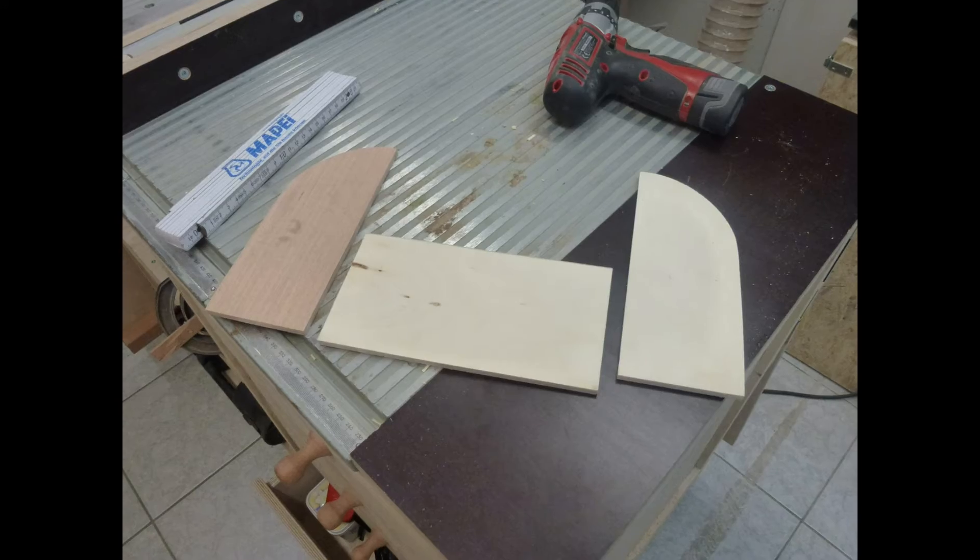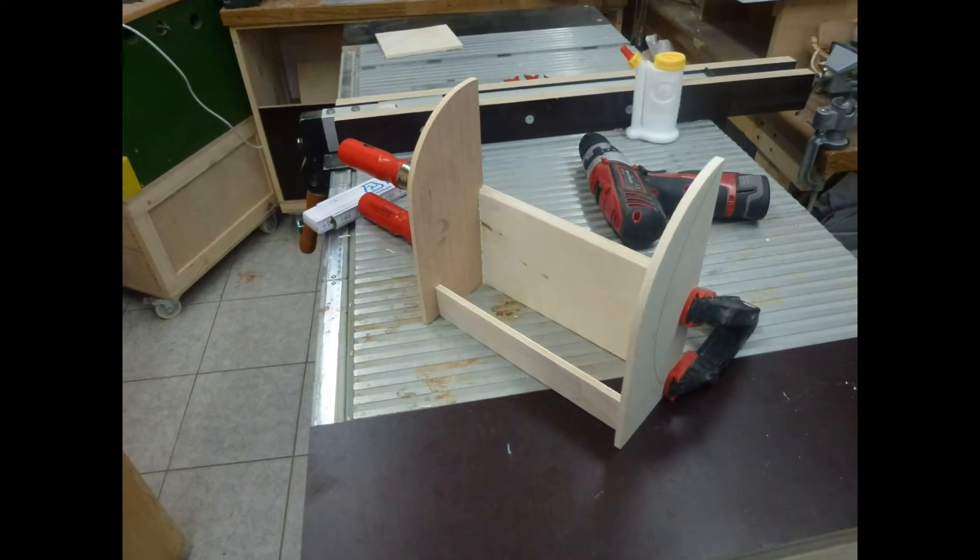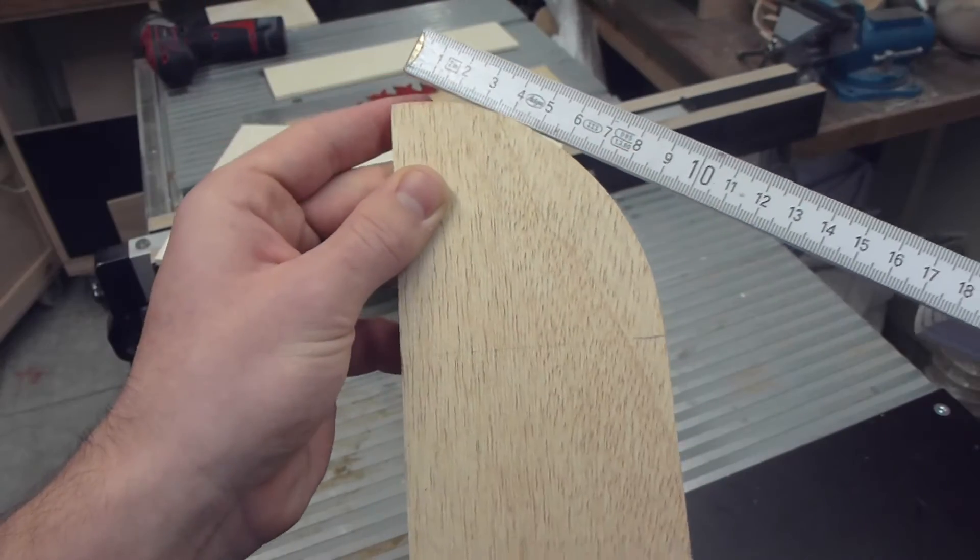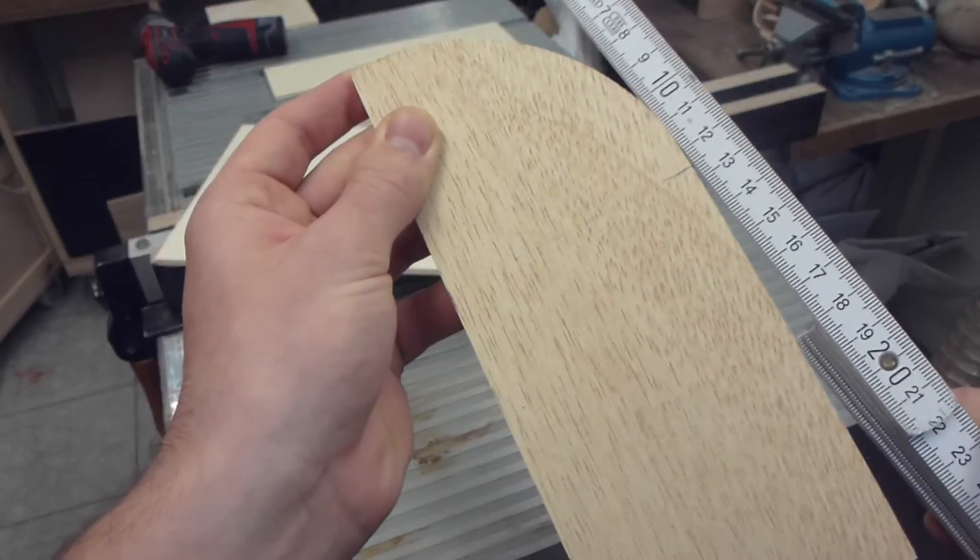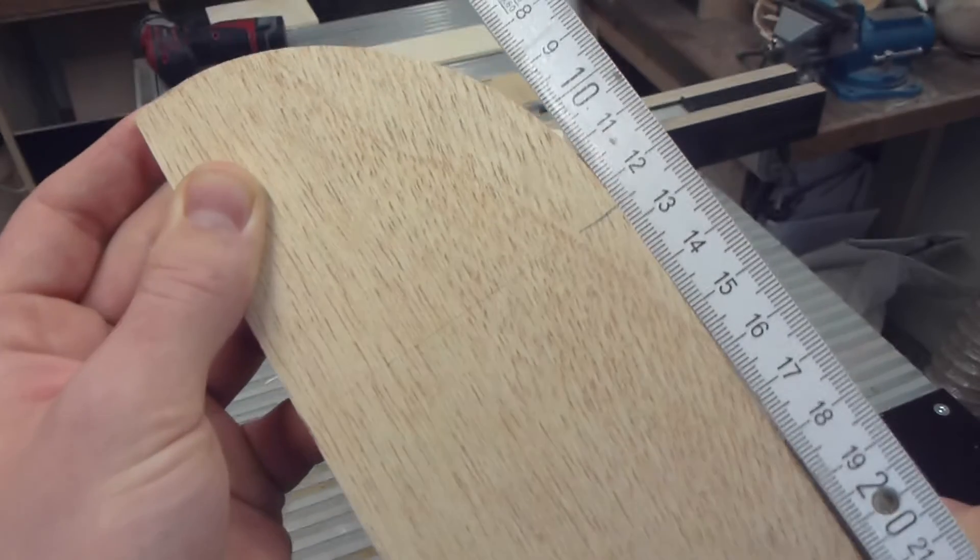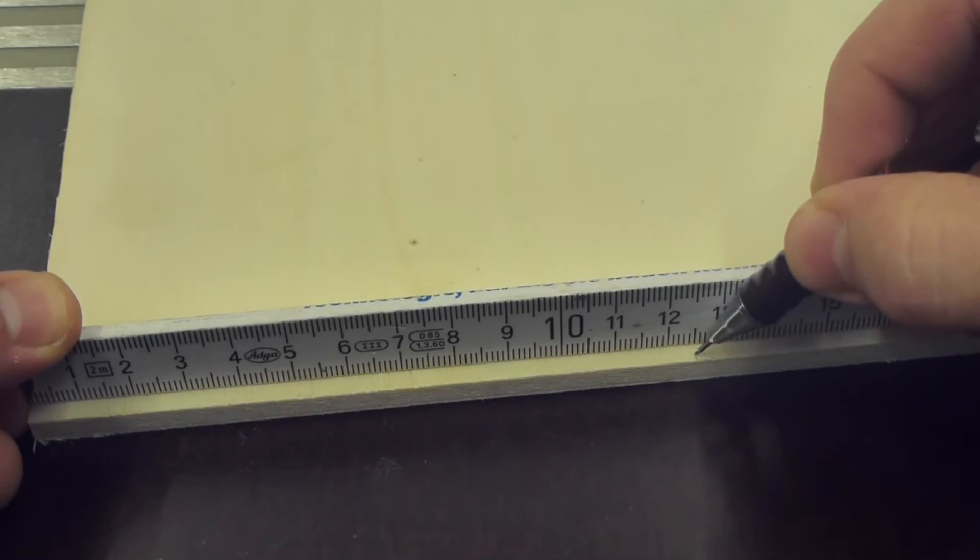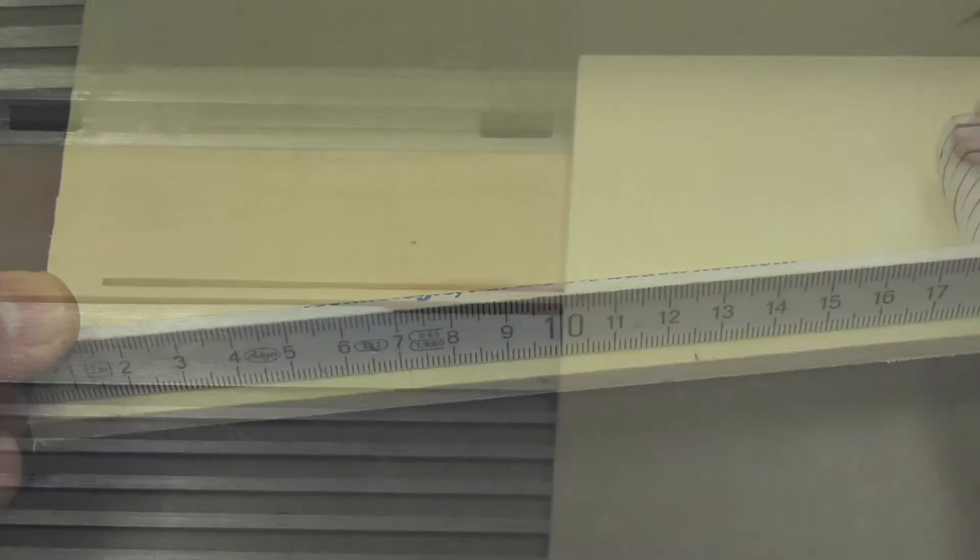So I started by cutting out some pieces of plywood with a similar shape to the original dust chute. The only challenge was to make the curved piece on the top. I made it by making multiple shallow passes with a table saw to make the plywood flexible.